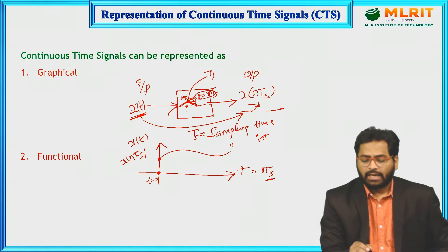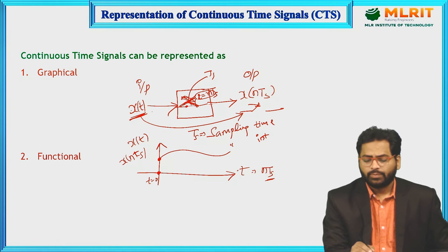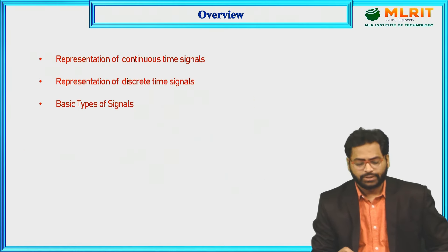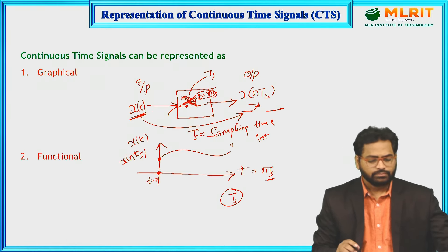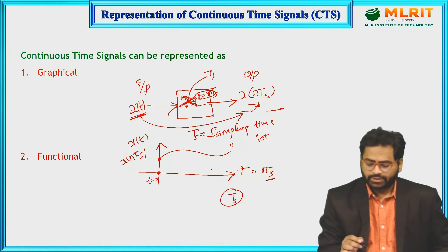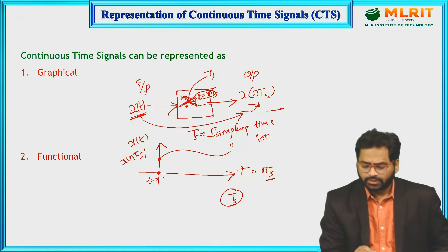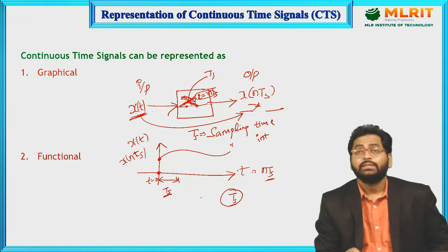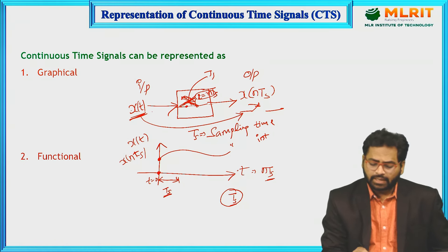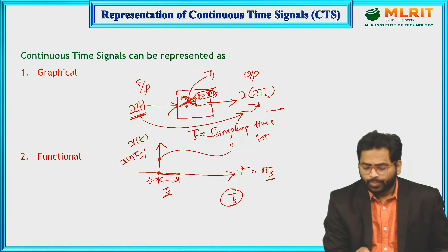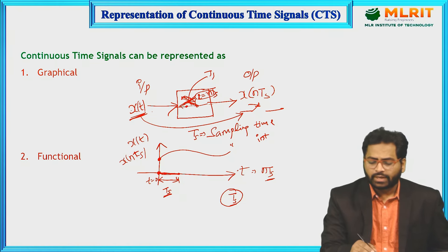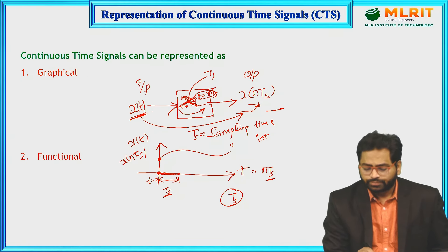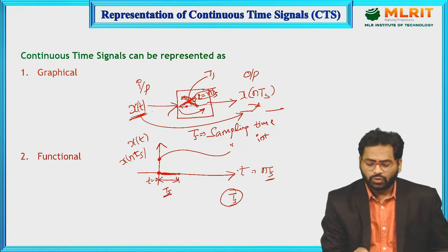Next, I am opening the switch for Ts duration — that is the sampling interval. From here to here, let us say it is Ts seconds. Up to this point my switch is opened. Open means there is no connection between input and output, so the corresponding output is 0 up to Ts seconds.